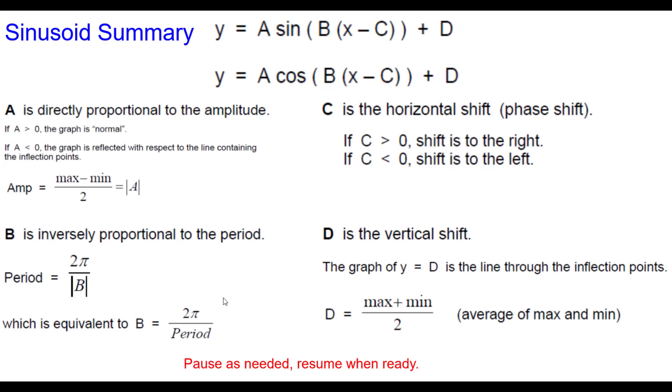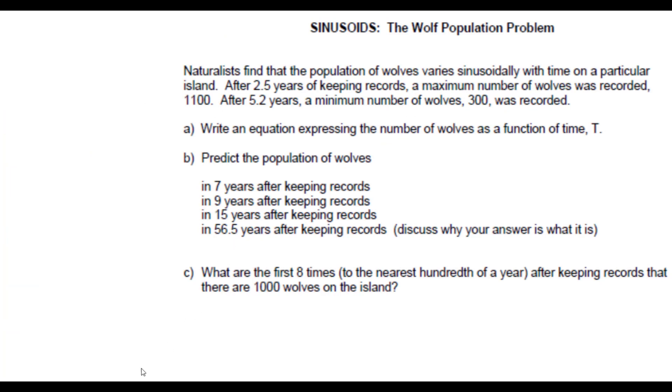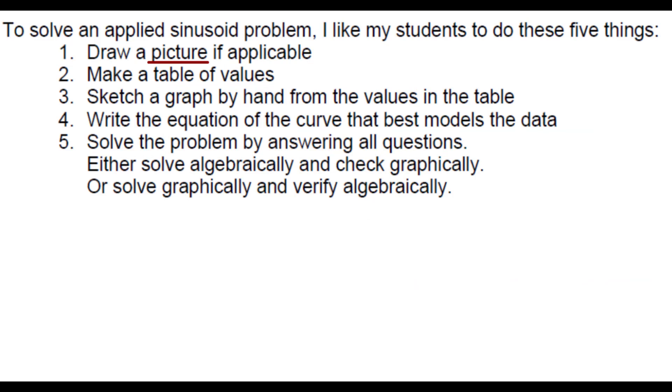So here's a summary of all these things. Pause as needed. Resume when you're ready. So let's go back to the problem. Notice that the problem says that the population of wolves varies sinusoidally with time. That means that we're able to model this with a sinusoid equation. When we solve an applied sinusoid problem, these are the five things I prefer that we do.